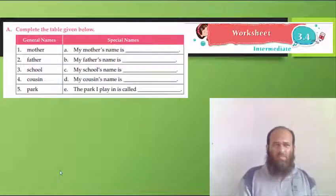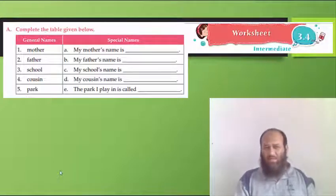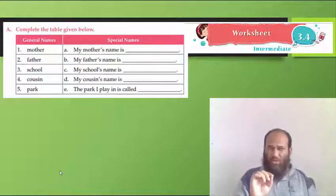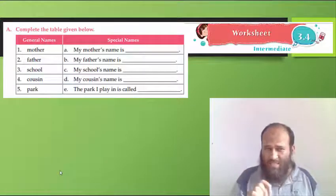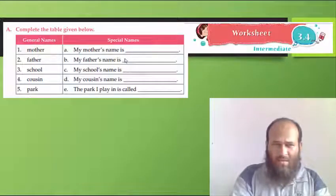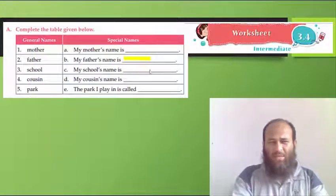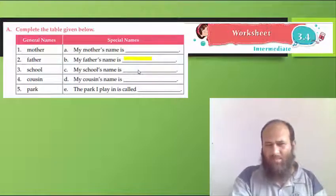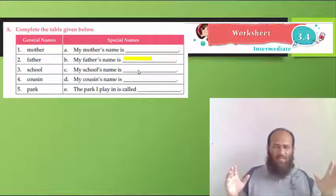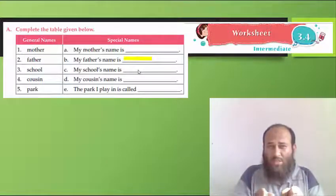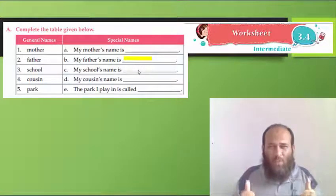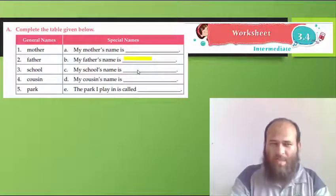So, I want you to complete the table here. My mother's name is - write your mother's name. My father's name is - write your father's name here. And then, my school's name is Roots and Wings Academy. What is your school's name?